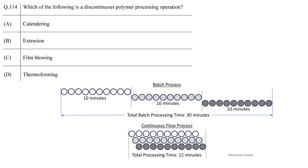On the other hand, cups are produced by thermoforming, for which first we need a sheet. So thermoforming consists of two steps: sheet making and then molding. Therefore, thermoforming is the discontinuous polymer processing operation. The correct answer is D, thermoforming.